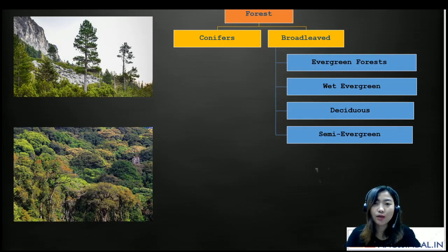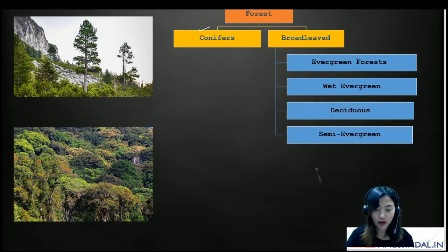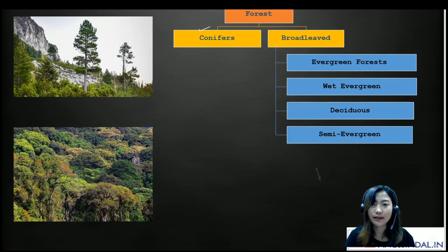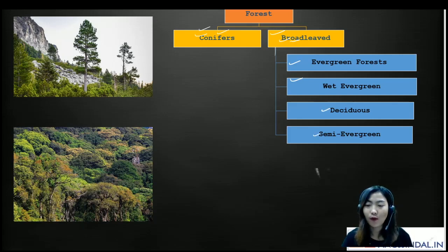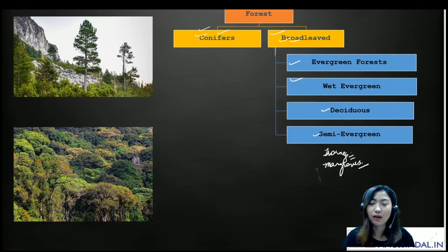Moving on to the types of forests — particularly for India. Forests can be classified on the basis of method of regeneration, age, composition, object, growing stock, as well as ownership. Based on environmental and climatic factors, forests in India are divided into conifers and broadleaves. Broadleaves can be further divided into subclasses like evergreen forests, wet evergreen, deciduous, semi-evergreen, and two more — thorny as well as mangroves. These are the sub-forests under the broadleaved forest.